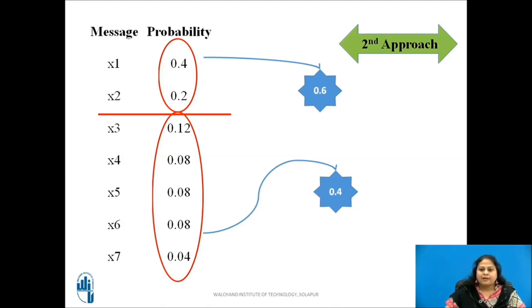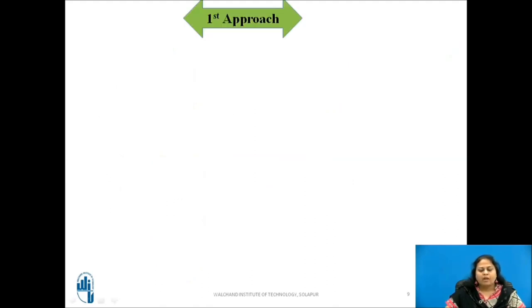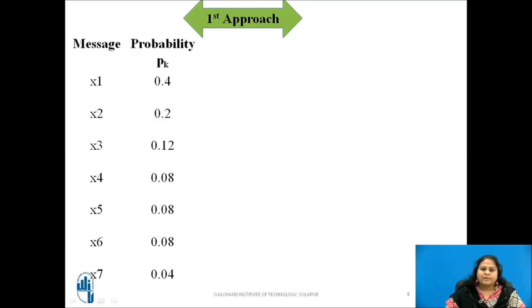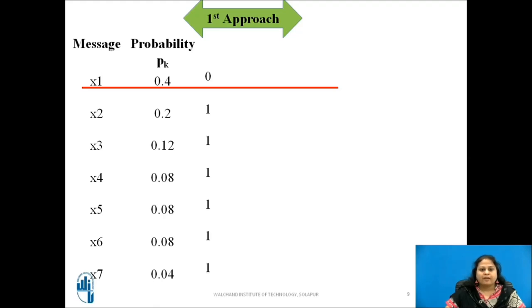Before finalizing this, let us apply Shannon-Fano coding procedure using both approaches and see the difference. Consider the first approach. Arranging the given messages in the decreasing order of their probabilities, let us first partition the message after x1. 0 is assigned to messages in the upper subset and 1 is assigned to all the messages in the lower subset. As the upper subset consists of only one message, no more partition is possible further. Considering the lower subset, the partition is now applied after x3, which gives minimum possible probability difference between the two subsets.